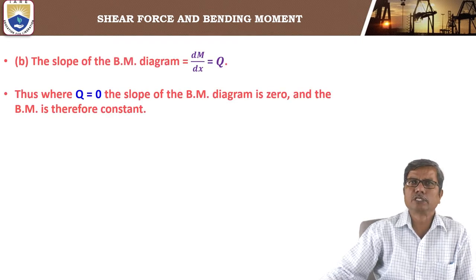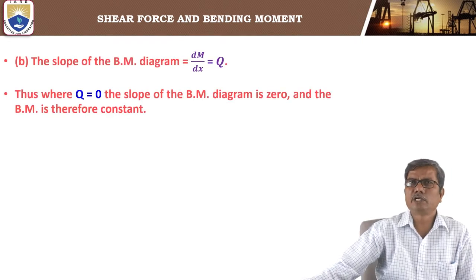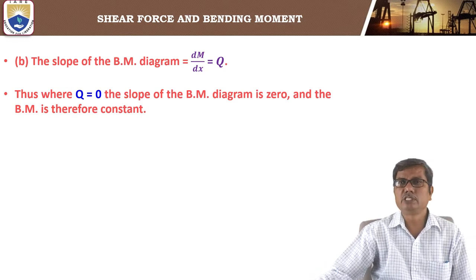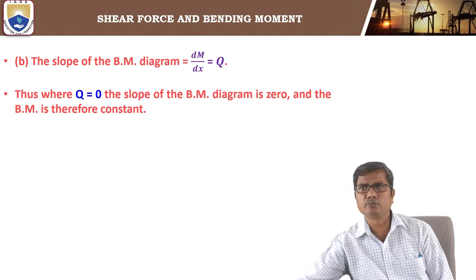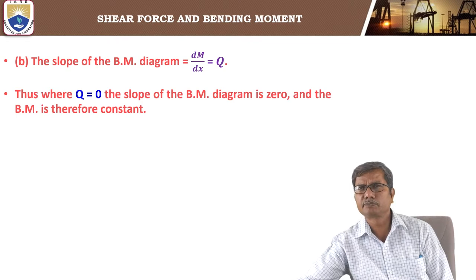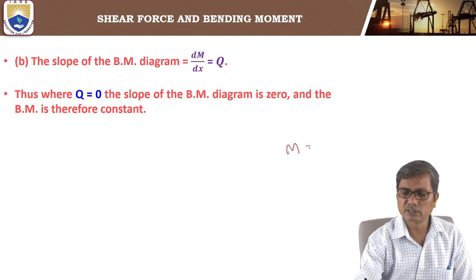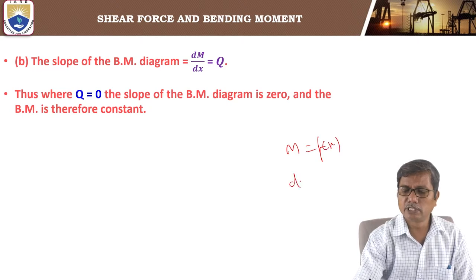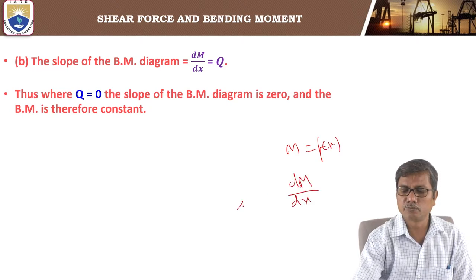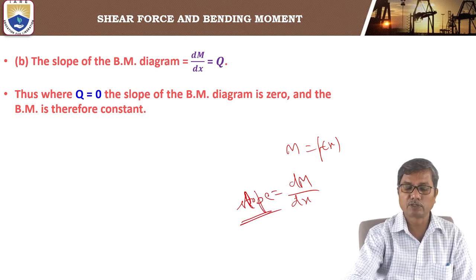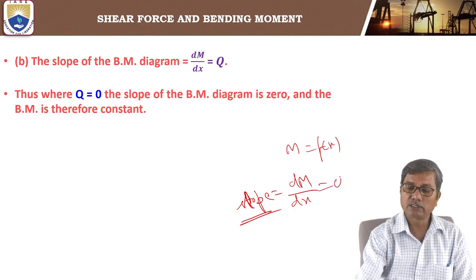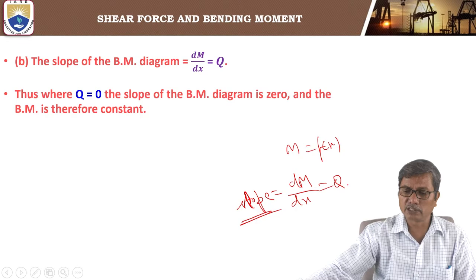The second conclusion: the slope of the bending moment diagram is dM by dx, which equals Q. Since M is a function of x, dM by dx is the slope of the bending moment curve, and we know the first derivative dM by dx is the shear force Q.